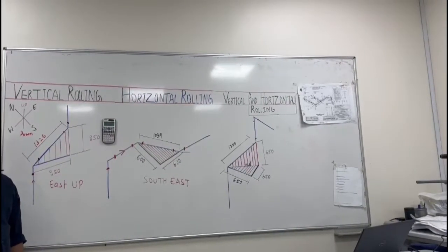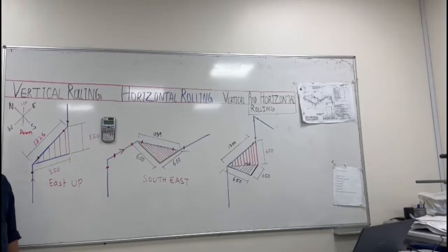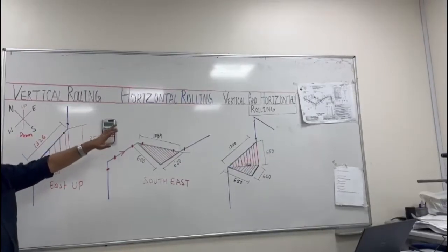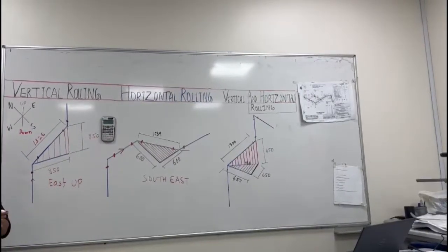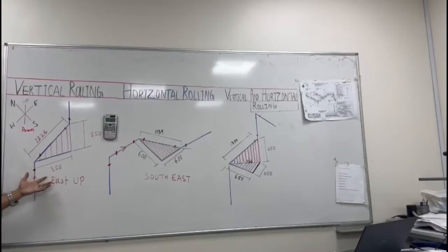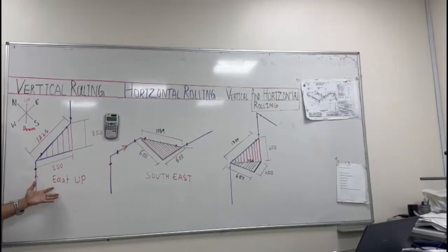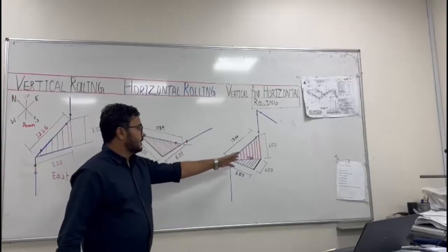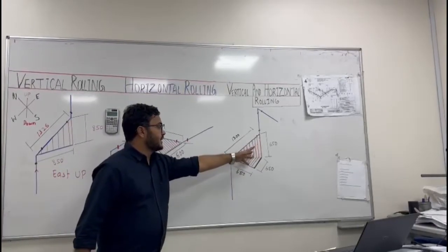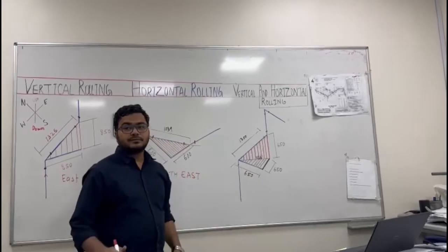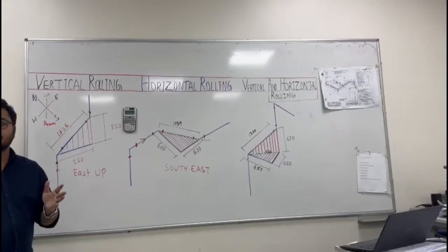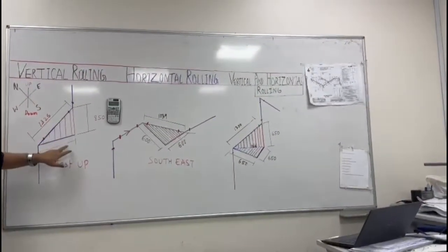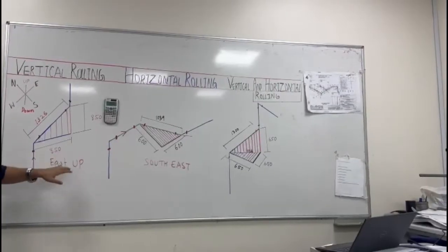Hello, today I will make you understand vertical rolling, horizontal rolling, and vertical and horizontal rolling. Here we have this vertical rolling figure, horizontal rolling this one, and vertical and horizontal rolling. Now I will make you understand one by one. First we have vertical rolling.